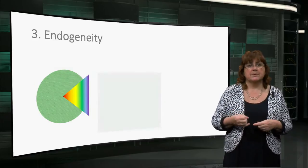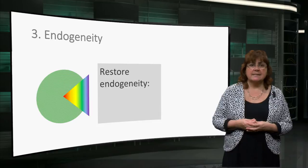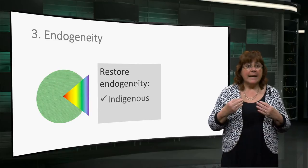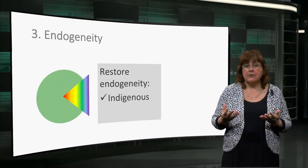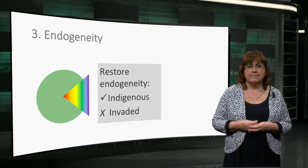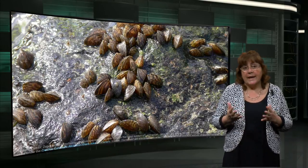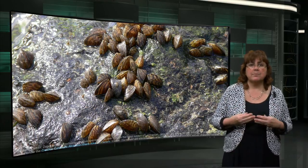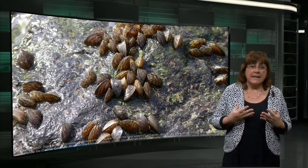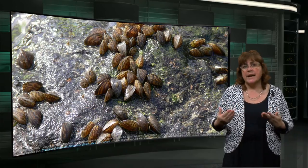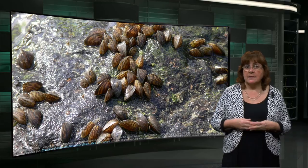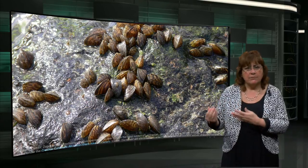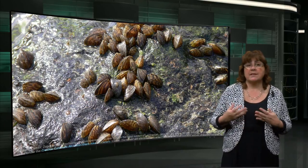The third principle of endogeneity relates to the level of invasion of an ecosystem by exotic species. A high level of indigenous species is preferred above invasive colonisation. A good example – or bad example – the zebra mussel is an invasive species in Europe and North America. Invasive species can limit the survival opportunities of native species, so a hydraulic structure or its associated activities shouldn't advantage invasive species above indigenous species.